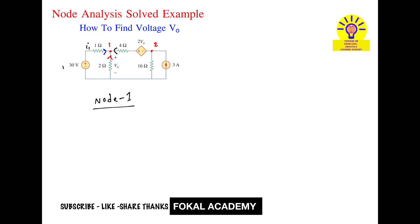Consider this is the current i1, this is the current i2, and this is the current i3. At node 1, we observe that all currents are incoming, so i1 plus i2 plus i3 equal to zero. Now write i1 — i1 is the current in this branch. At node 1 the voltage is V0, so i1 equals V0 minus 30 divided by 1 ohm resistance.